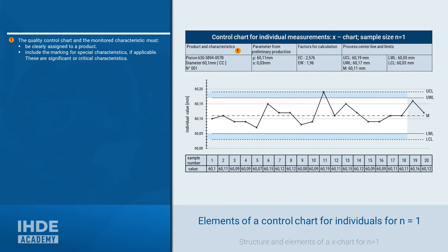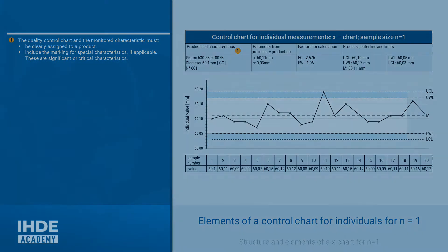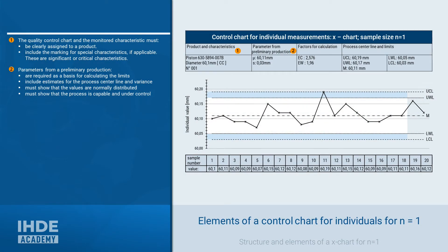Significant or critical product characteristics must be marked as such. A process monitored with the control chart must be capable and in statistical control. The definitions of capable and in statistical control or stable have a lesson of their own. For the creation of the control chart, the assumption is that the measured values are randomly, normally distributed. The starting point for the calculations is known data from an existing series production. If it is a new process, a pre-series production must be done — a production under series conditions for the purpose of data collection.